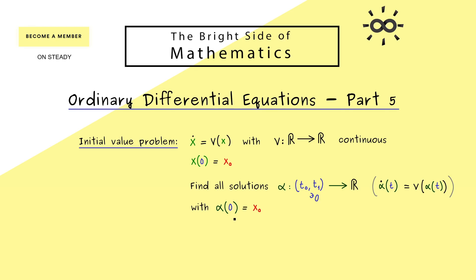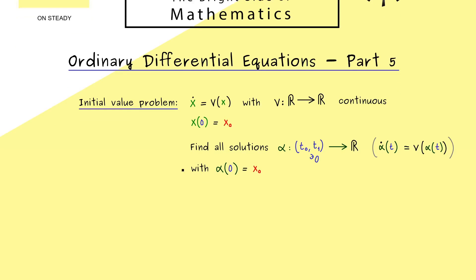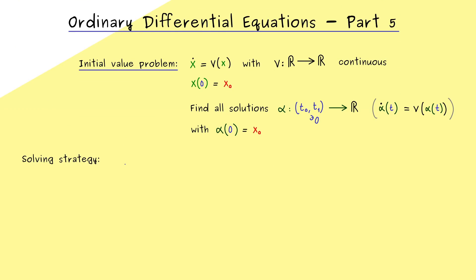Note that choosing time point 0 is not a restriction at all, simply because we have an autonomous ODE where time is not explicitly in it. So 0 is an arbitrary choice but without loss of generality. Now the question is: how can we solve such an ODE with a given initial condition? And indeed there is a general solving strategy we can now develop.